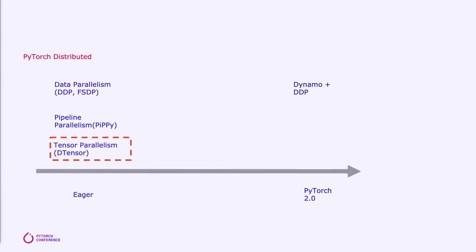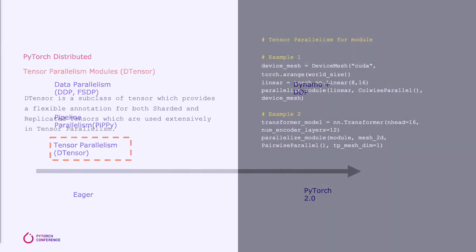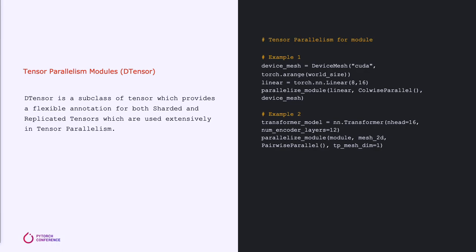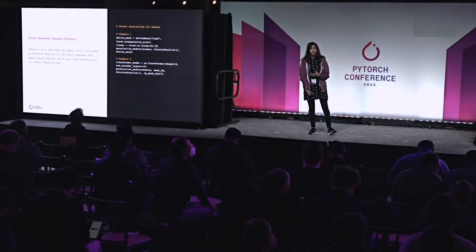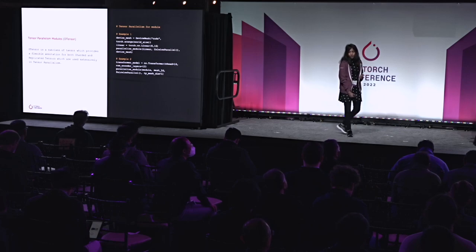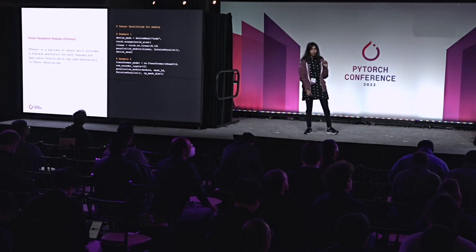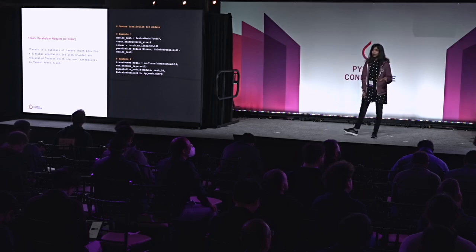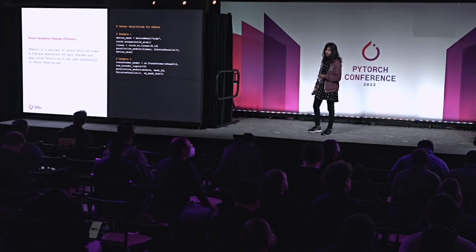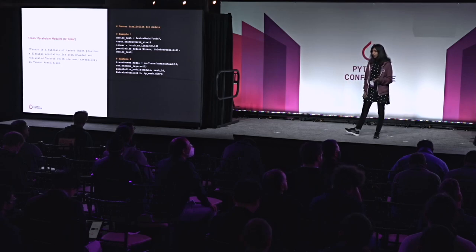We've also implemented tensor parallelism using core DTensor constructs. Tensor parallelism is useful when you have computation that is inherently parallel and can be sharded across devices. It's also useful when you want to defer synchronization. The tensor parallelism API uses a parallelized module called on a model, and we specify a parallel plan which specifies how you want to shard the weights in your model. For example, we have an nn.linear module and we call parallelized module on it with a column-wise parallel plan, meaning you're sharding the weights of your module in dimension one. The inputs and outputs to this layer are massaged based on the parallel plan, so they can be sharded or replicated as specified.